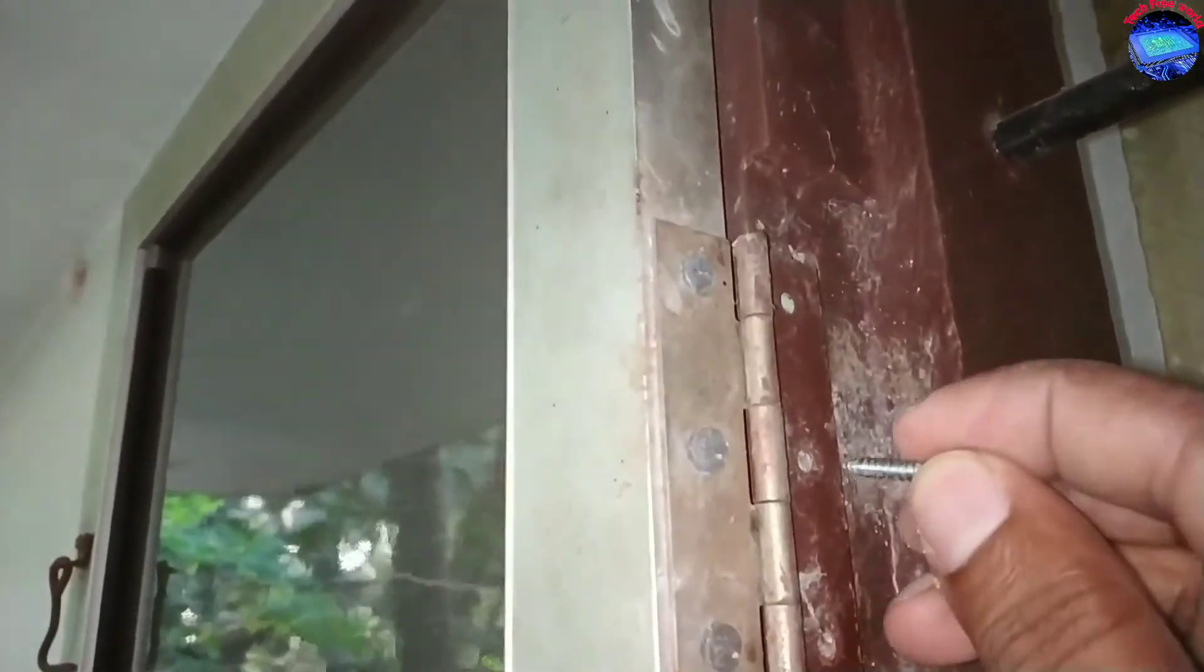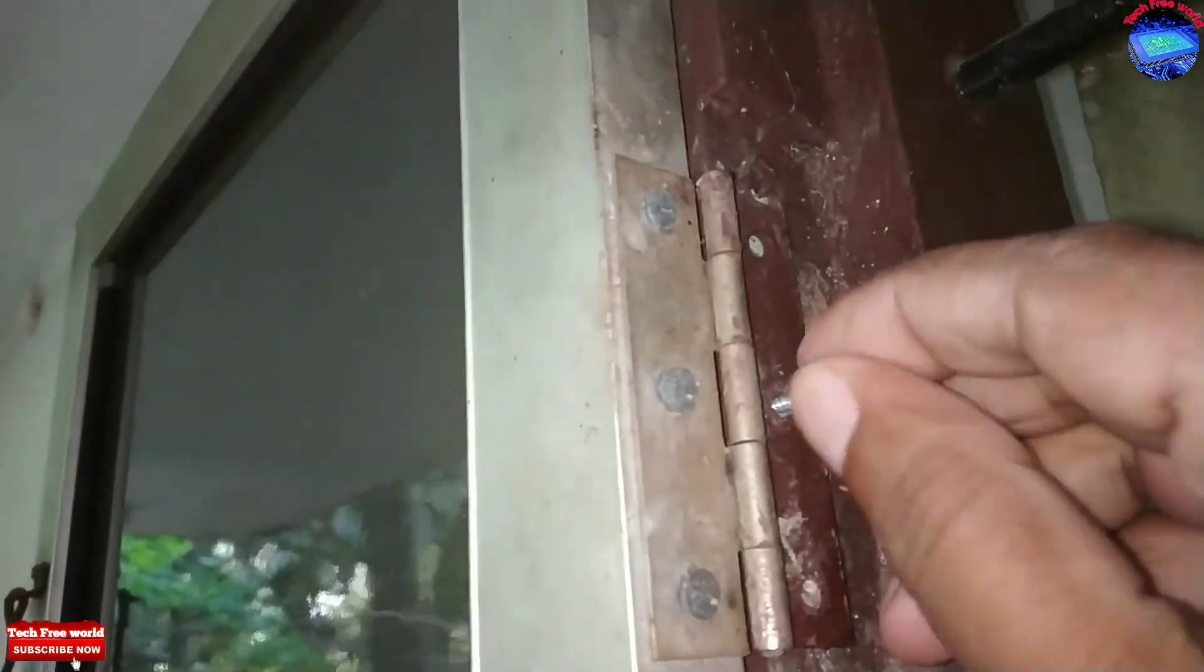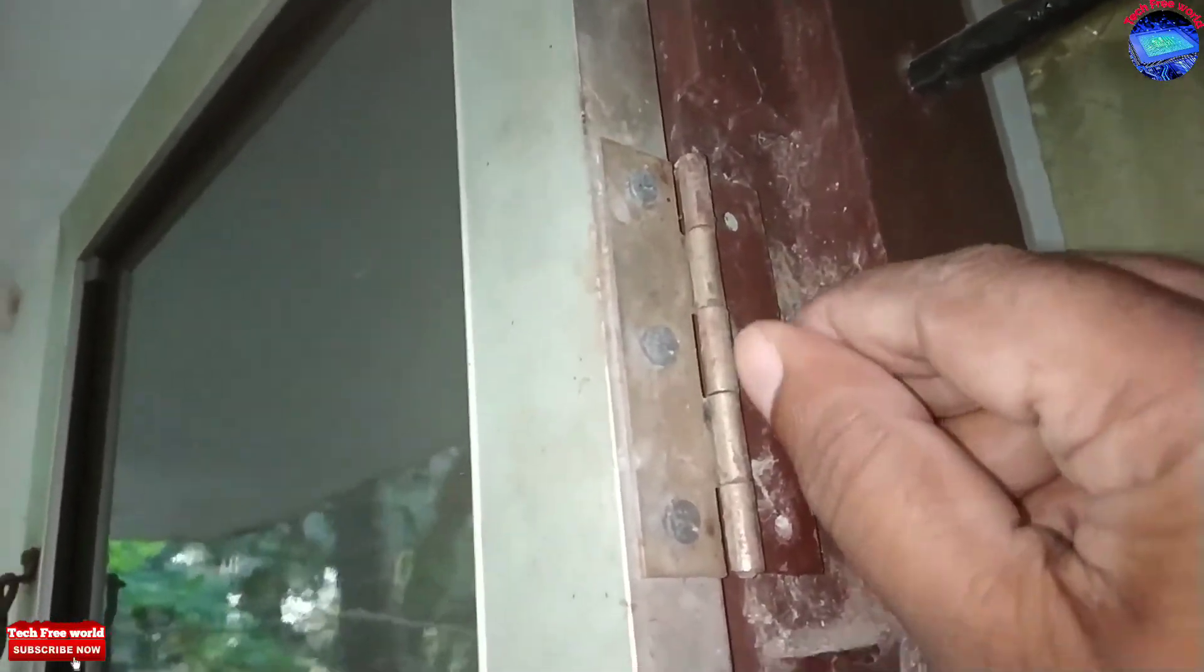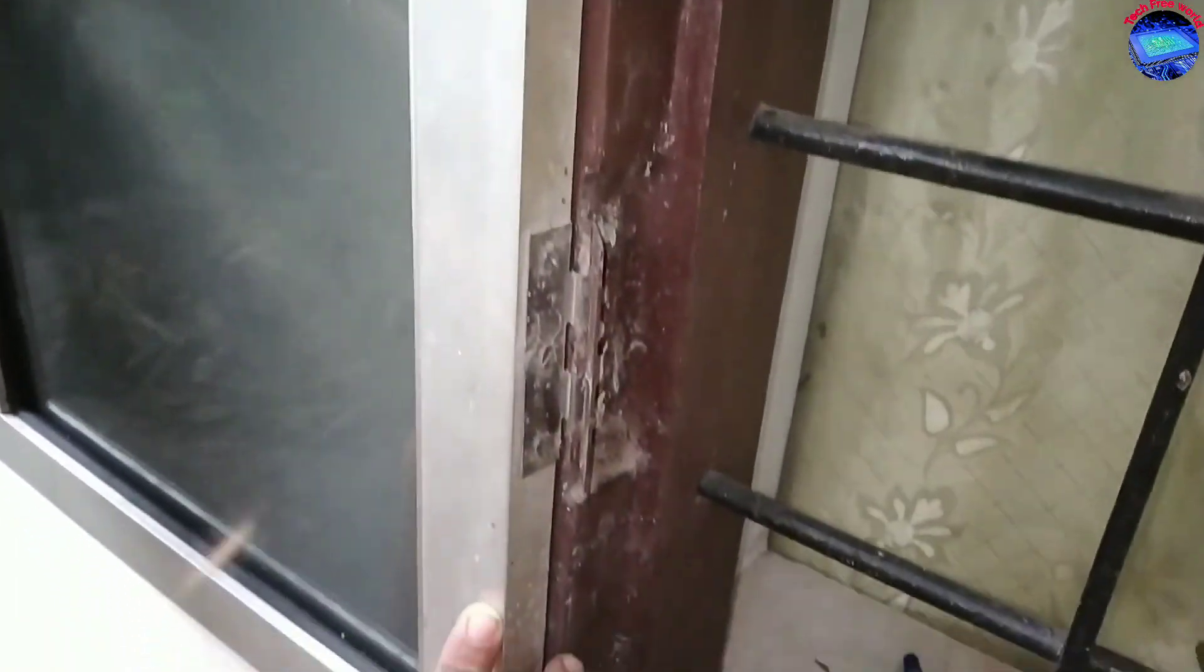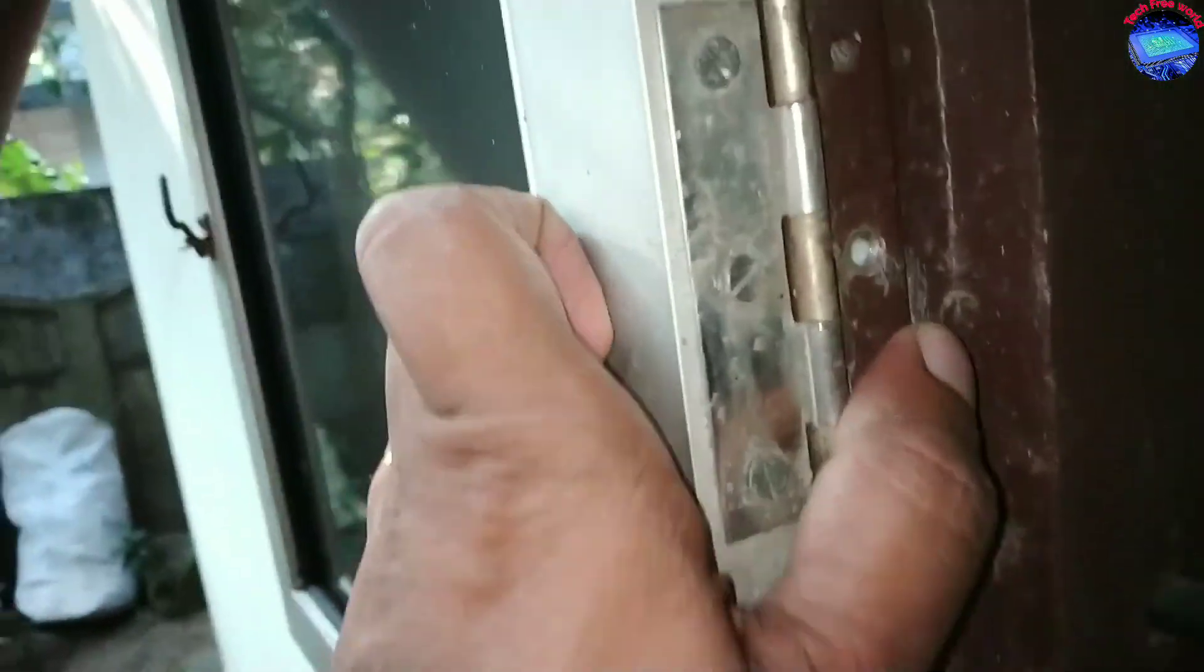After tightening screws, the top side of the window is fixed into the wall. After, I am going to fix the screw in the bottom side.